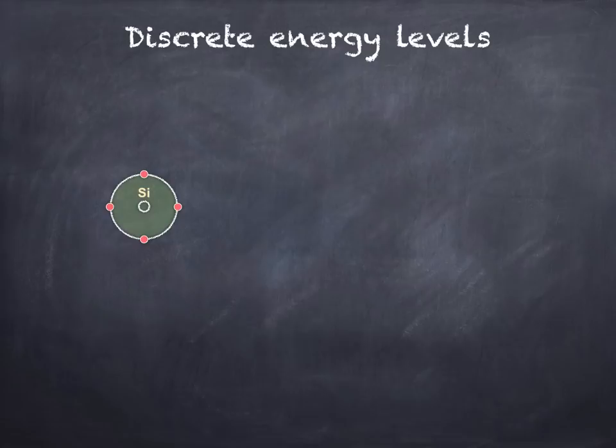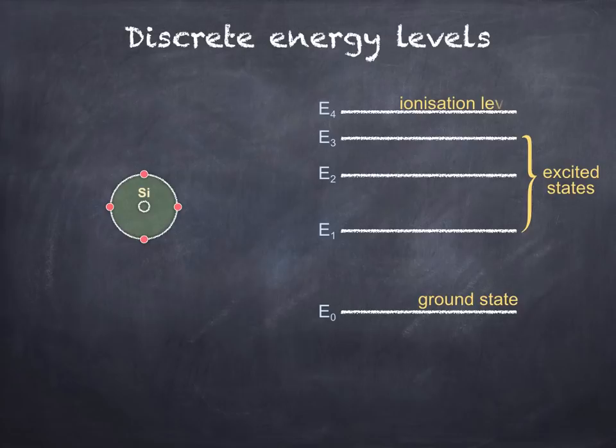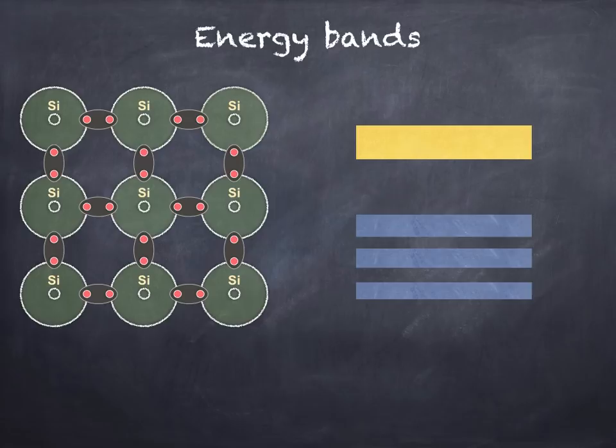In individual atoms, the electrons can only occupy discrete energy levels. The production of line emission spectra and line absorption spectra can be explained in terms of electrons moving to different energy levels and either emitting or absorbing a photon, although that's covered in another lesson. When a large number of atoms come together to form a solid, the energy levels become reorganized into bands as the atoms interact.